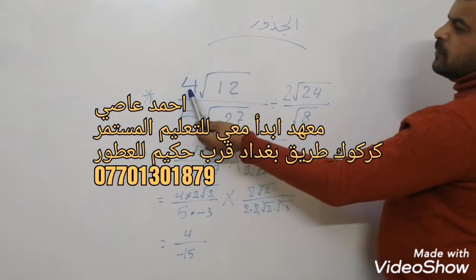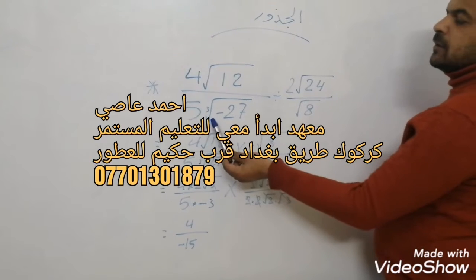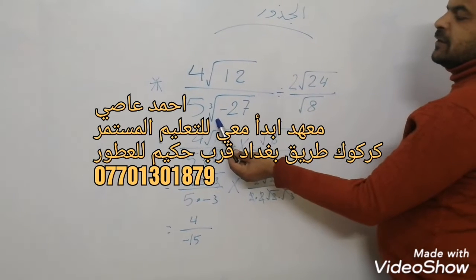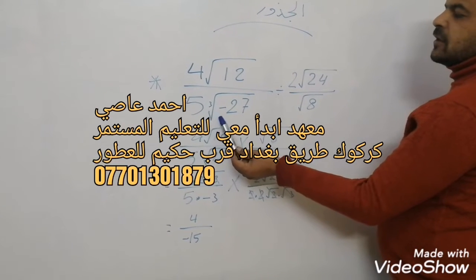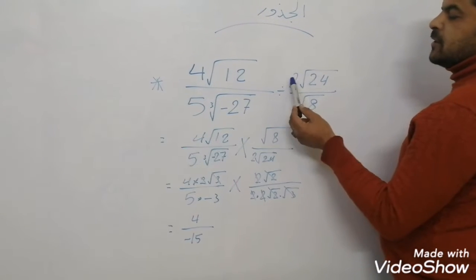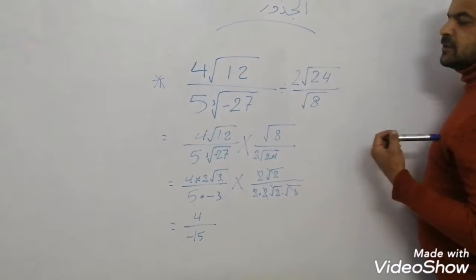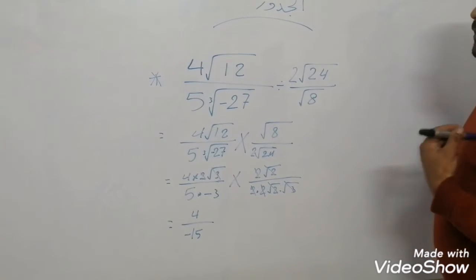We have one thing that is 4th to 12th to 5th to 27th to 27th to 24th to 24th to 24th to 8th.